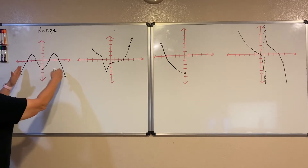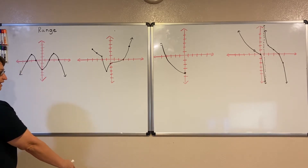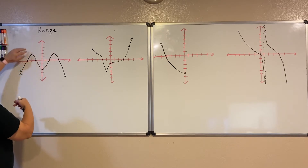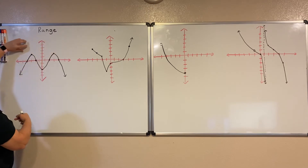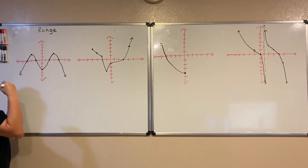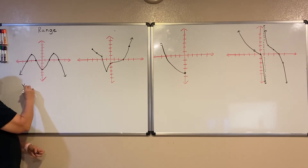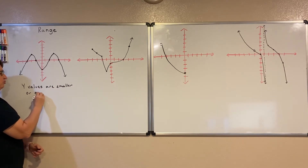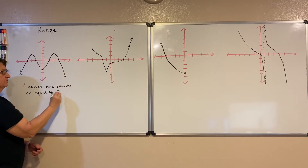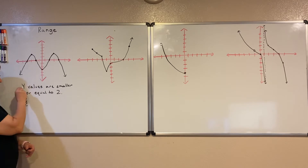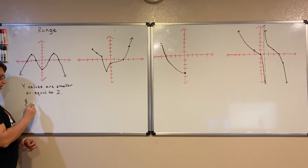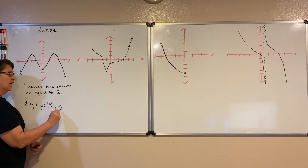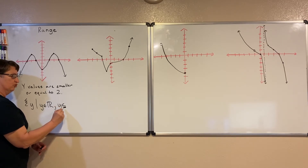In this case we've got output values — y-values — and this tells me it goes on forever down to negative infinity. So all the way from negative infinity up to two there's an output value. But notice there's nothing larger than that; we didn't get any y-values larger than two. So our range is: y-values have to be smaller than or equal to positive two. In set builder notation, since we're talking about our y-values, y can be any real number as long as it is less than or equal to two.